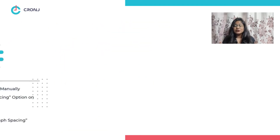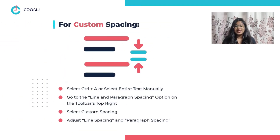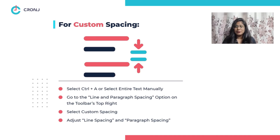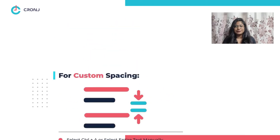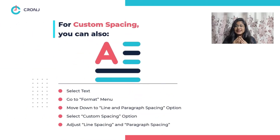Number six: custom spacing. You can also remove a page by customizing your text in Google Docs. For that, select Ctrl+A on your keyboard or manually select the entire text in your document. Next, go to the Line and Paragraph Spacing option on the top right of your toolbar, then select the Custom Spacing option.